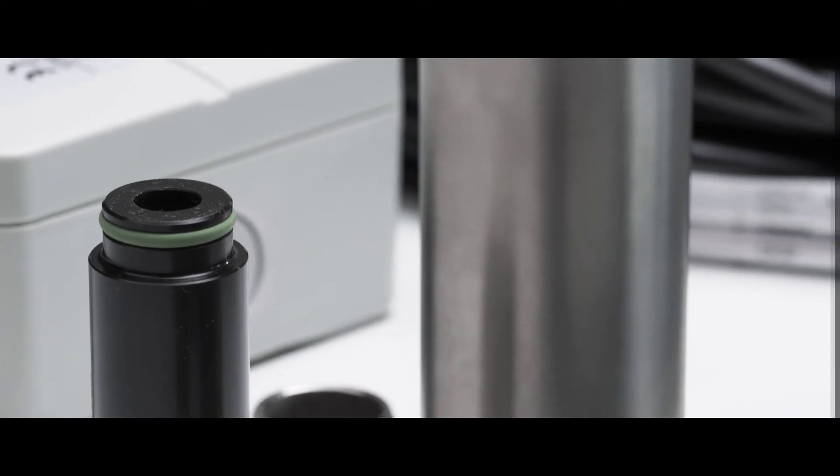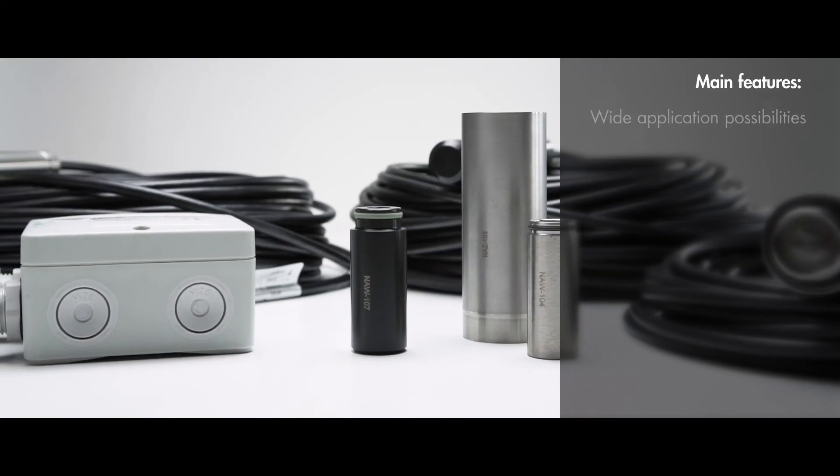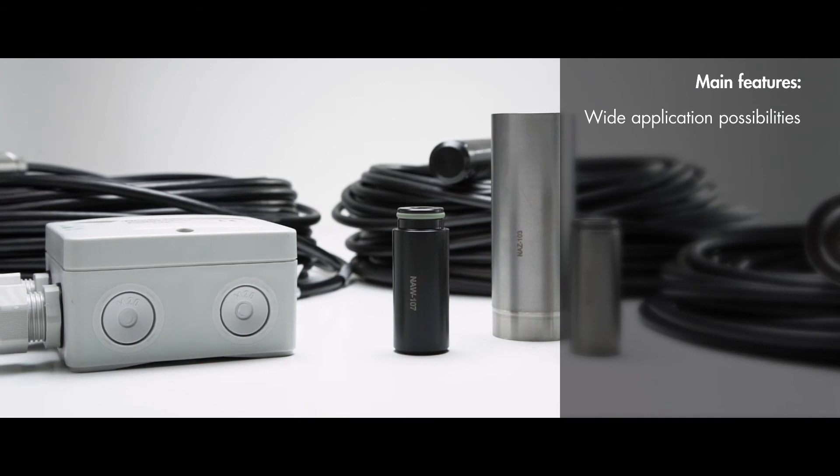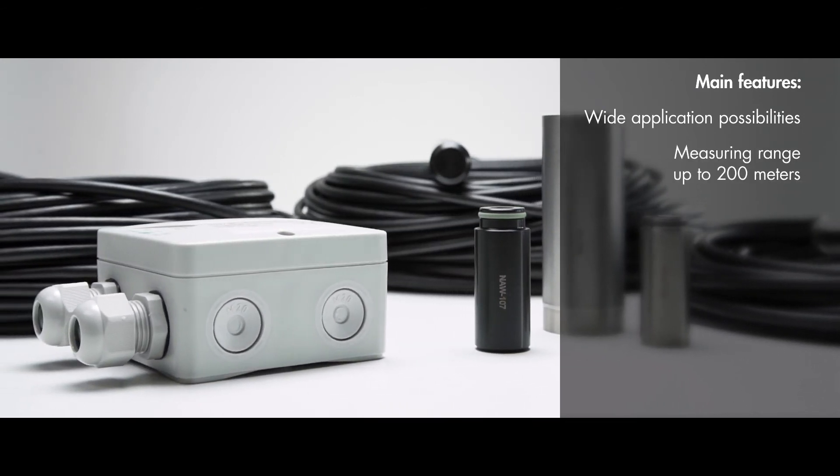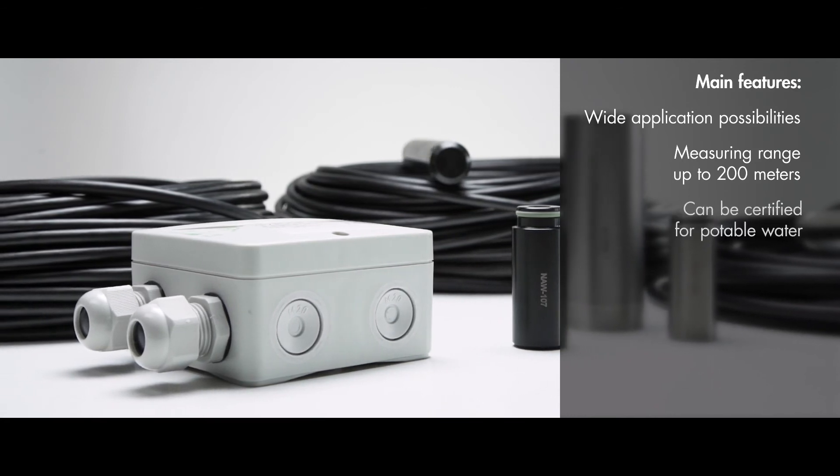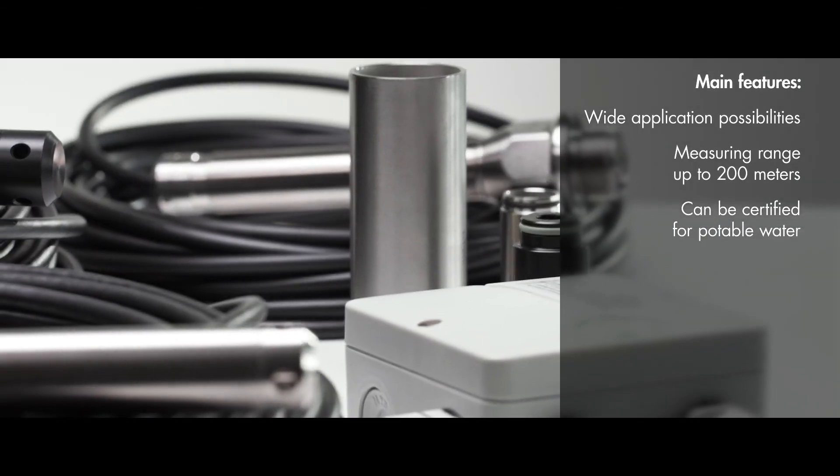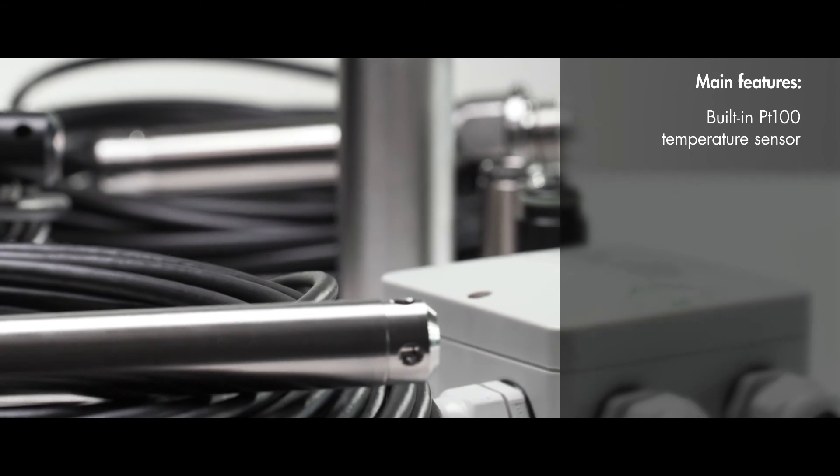The main features of Nivelco's Nivopress N are the following. Submersible or screw-in types providing wide application possibilities. Measuring range up to 200 meters. Can be certified for potable water. Built-in PT100 temperature sensor.